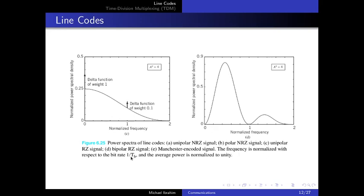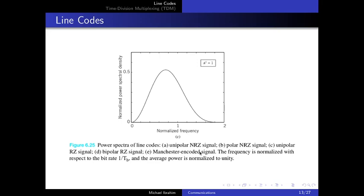Manchester encoding also lacks significant low-frequency components but again requires approximately double the bandwidth — around 2/Tb. This is why studying line codes is important: you must choose a code that provides good synchronization properties while also managing bandwidth requirements.